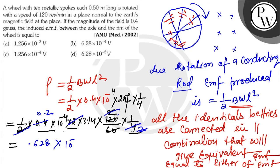Times 10^-4 volts. I can also write this as 6.28 times 10^-5 volts. So the right answer is D. All the best.